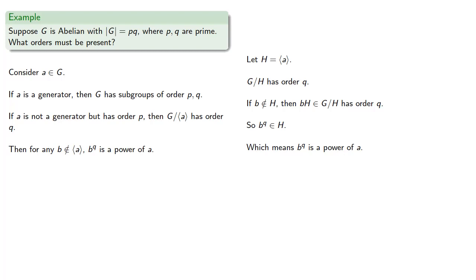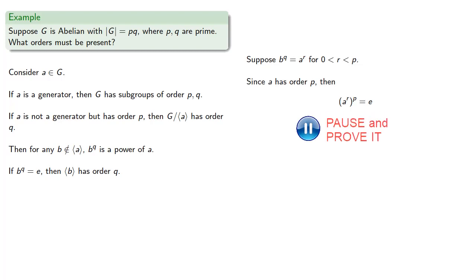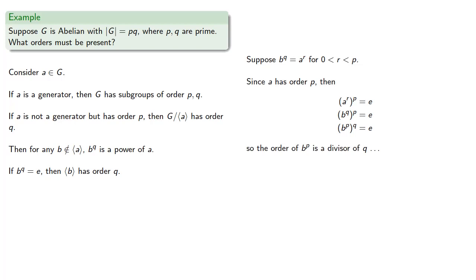And so for any b not in the subgroup generated by a, b to the power q is a power of a — and maybe it's the identity. If b to the power q is the identity, then b has order q. Otherwise, suppose b to the power q is a to the power r for some r less than p. Since a has order p, we know a to the r to the p must be the identity. So b to the q to the p must be the identity. And since exponents are counts, we can switch those exponents: b to the power p, raised to the q, must be the identity. So the order of b to the p must be a divisor of q. But since q is prime, b to the power p has order q.